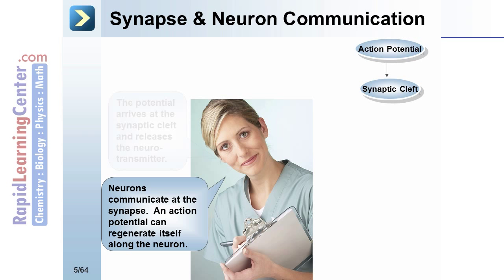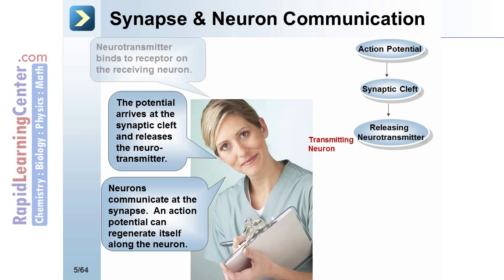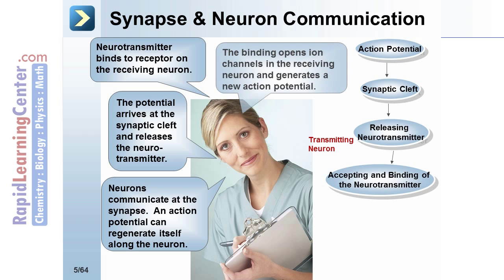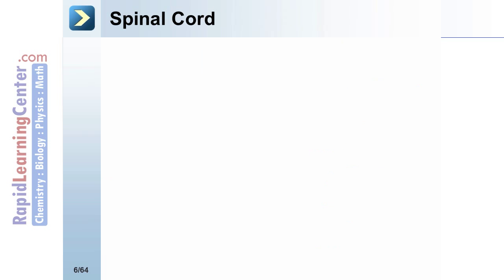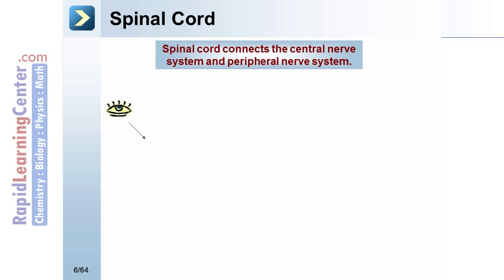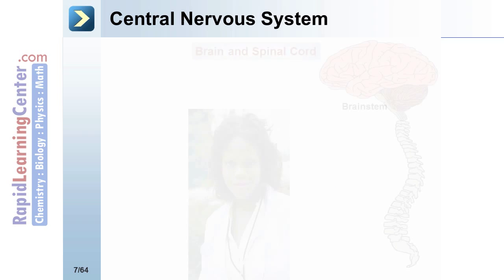Synapses and neuron communication: neurons communicate at the synapse. An action potential can regenerate itself along the neuron. The potential arrives at the synaptic cleft and releases neurotransmitter. The neurotransmitter binds to receptors on the receiving neuron, opening ion channels and generating a new action potential.